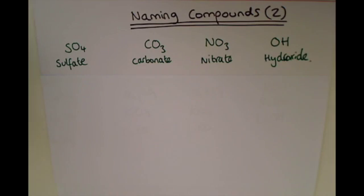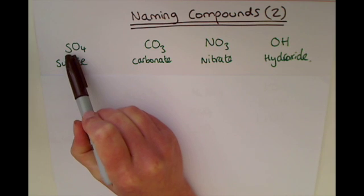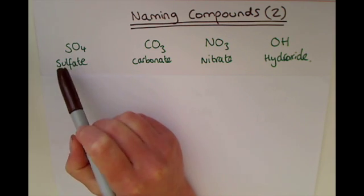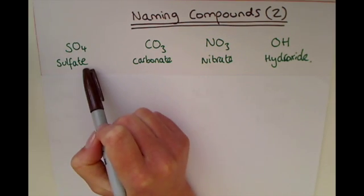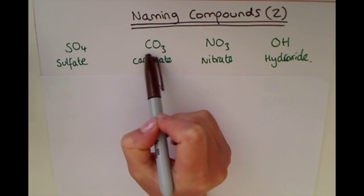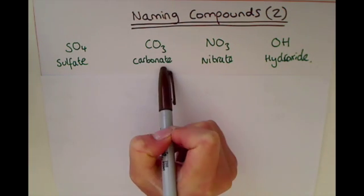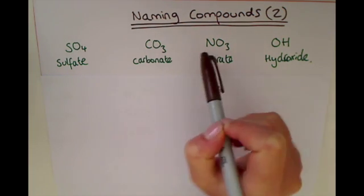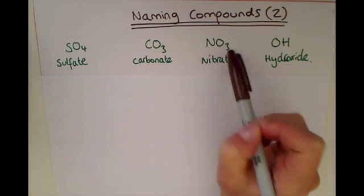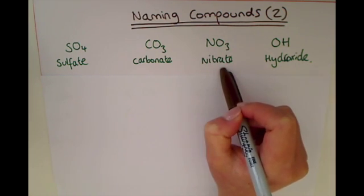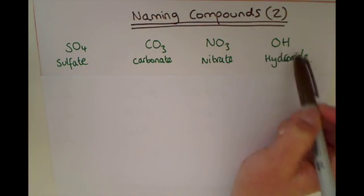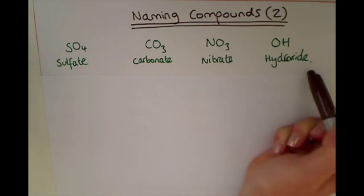Now I want to introduce some more complex endings to compounds that you might come across. For example, SO4 is called sulfate, CO3 is called carbonate, NO3 is called nitrate, and OH is called hydroxide.